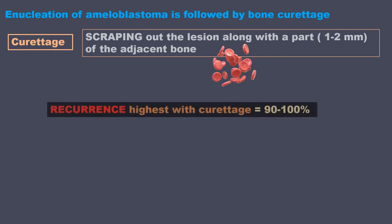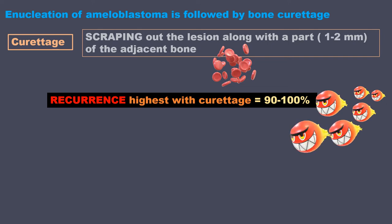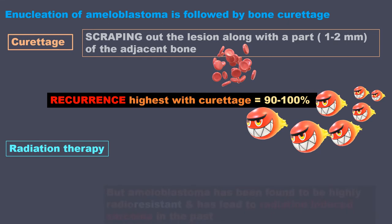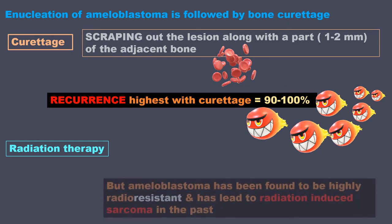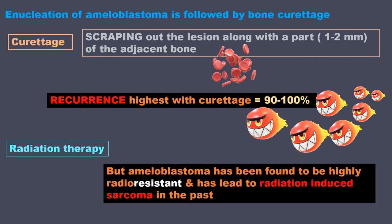Curettage is the scraping out of the lesion along with 1–2 mm of the adjacent bone. This process induces fresh bleeding which fills up the cavity and helps in new bone formation. Recurrence is highest with curettage — 90 to 100% — because even a little bit of tissue left behind in the bone can act as a point of origin from where new cells proliferate. Radiation therapy is not an option as ameloblastoma is highly radio-resistant and has led to radiation-induced sarcoma in the past.